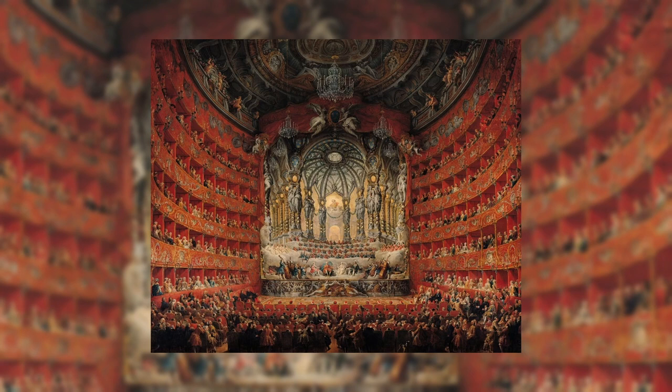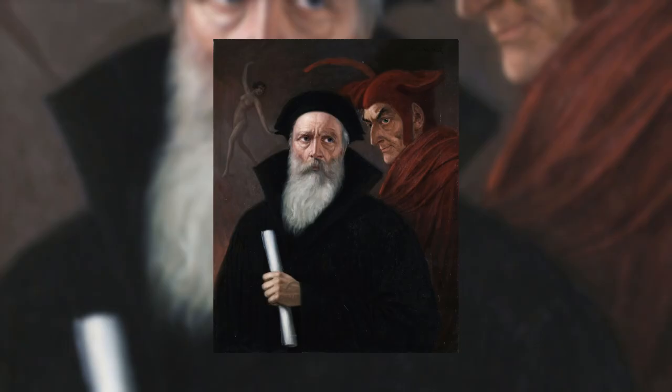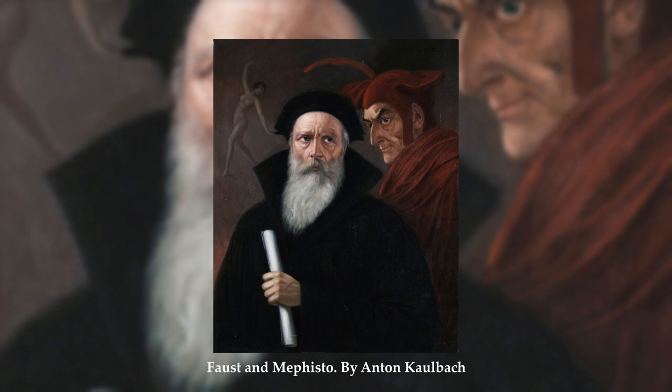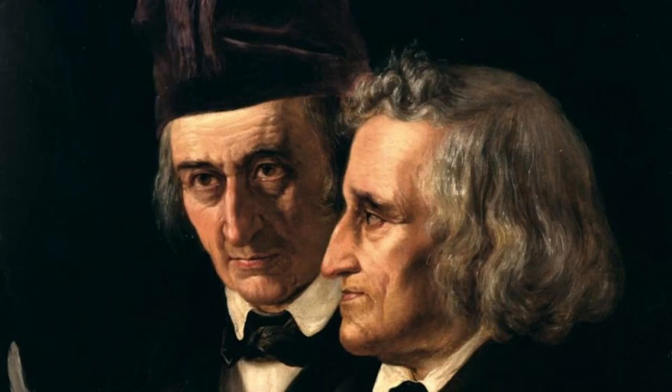29. Faust. Faust is hailed as one of the greatest plays ever made, and it is also one of the most famous in German literature. The work tells the story of Faust, a great scholar who feels empty. For this reason, he ends up making a pact with the devil in exchange for his wishes being fulfilled, with the condition that if the devil gives Faust a moment so pleasant that he wants to prolong it forever, at that moment he will die. The author, Johann Wolfgang Goethe, finished the work a few months before his death.